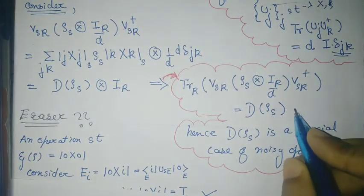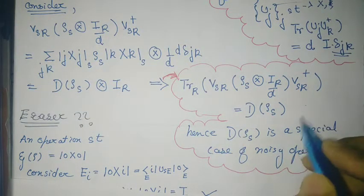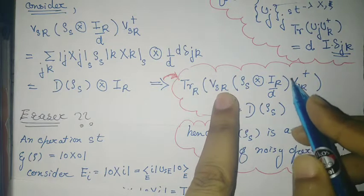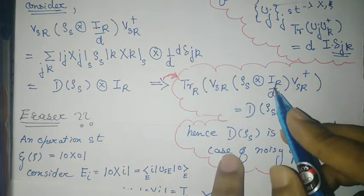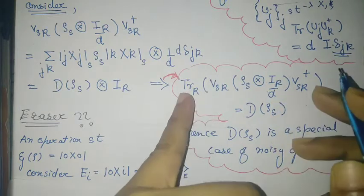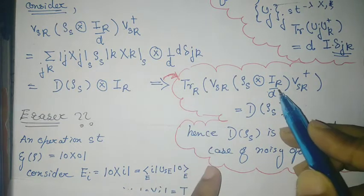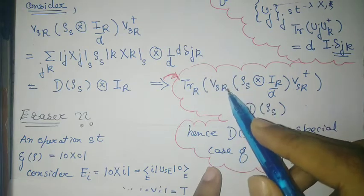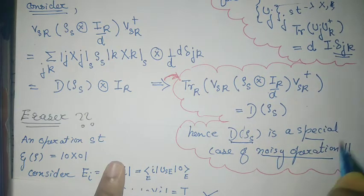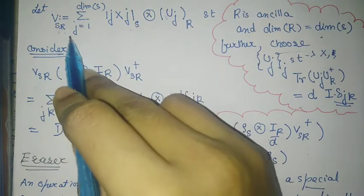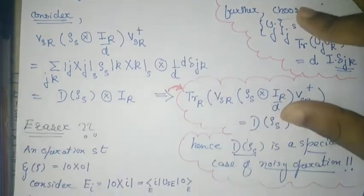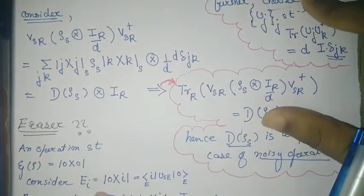This is just a special case of noisy operations. In general noisy operations, any unitary is possible and the environment state is the maximally mixed state. Here the same is true, but the unitaries are actually fixed. So the dephasing operation is obviously a special case of noisy operations where the unitary V in the noisy operation channel is fixed to be this specific form. This characterization of dephasing will be used when discussing quantum thermodynamics.